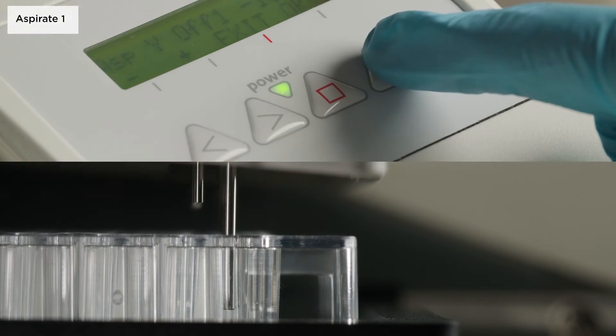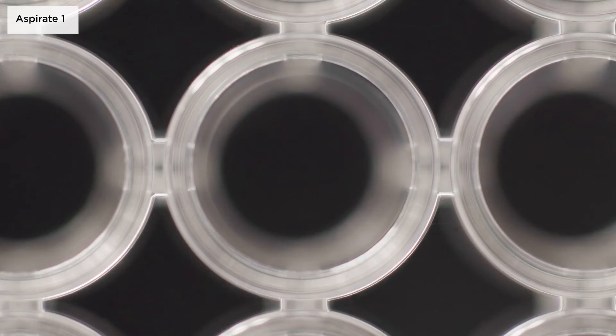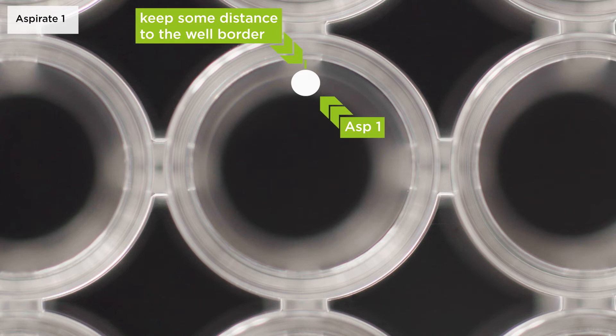The aspiration one position is available for all plate types. For flat bottom plates, the aspiration needles are typically positioned at the back of the wells. Make sure to keep some distance to the well border to prevent drops remaining in the well or the needles hitting the plate.